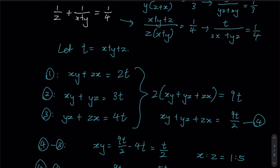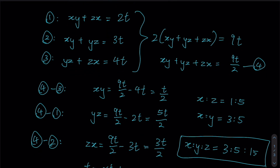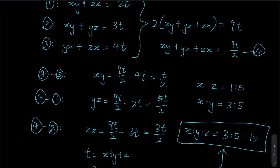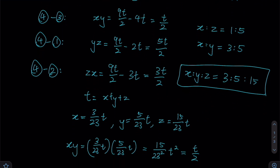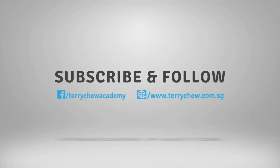With three equations sharing the same three terms, we summed them to get xy plus yz plus zx, then found each product individually. Next we derived the ratio for x, y, and z, and used those values to form an equation in terms of t to obtain a numerical value. From there, simple substitution gave us x, y, and z. Thank you for watching — I hope you enjoyed today's lesson. Please like and subscribe for more tutorials!